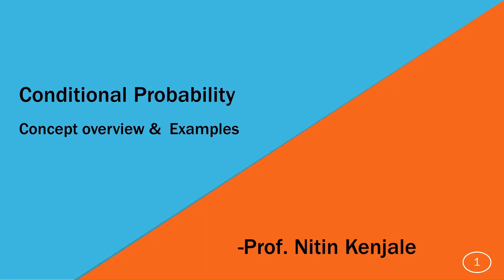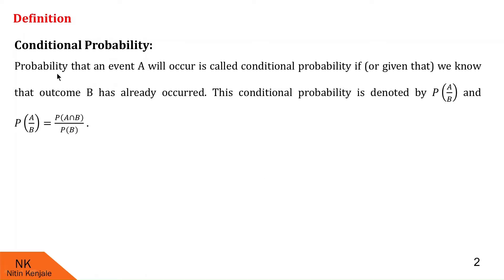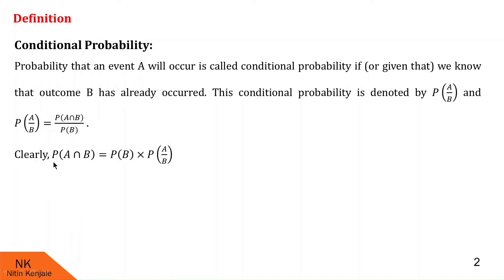Let us first discuss the definition of conditional probability. The probability that an event A will occur is called conditional probability if we know that the outcome or event B has already occurred. This is denoted by P of A given B. Note that A is the event whose probability we want to find and B is the event which has already occurred. P of A given B is given by P of A intersection B upon P of B. A little rearrangement gives us: probability of A intersection B equals probability of B times probability of A given B.